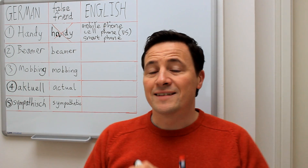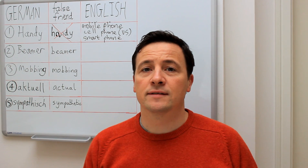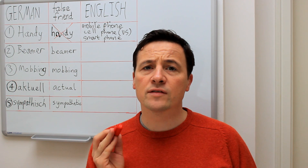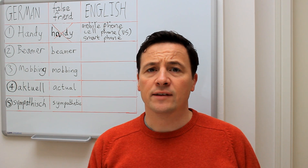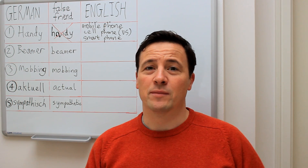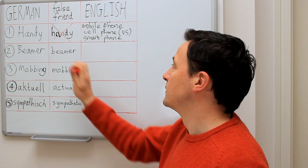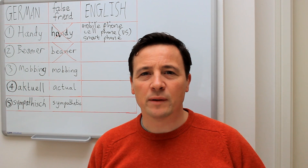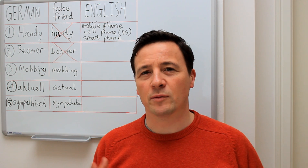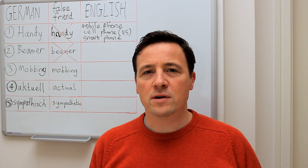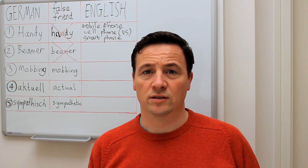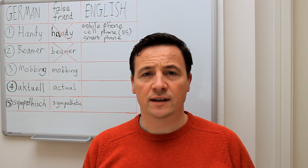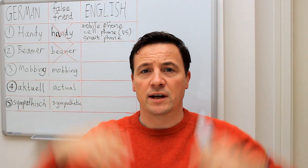A second false friend between German and English is the German word 'beamer'. Beamer in German is not the same as beamer in English. There is an English word 'beamer' and some people use it to talk about a BMW car, but a beamer in German refers to a projector, a data projector, or a video projector.